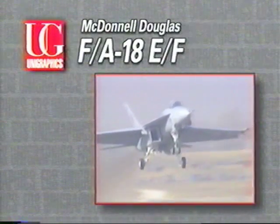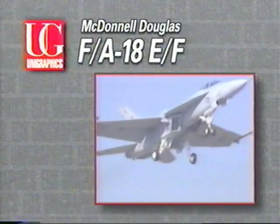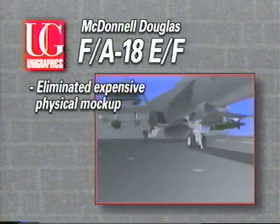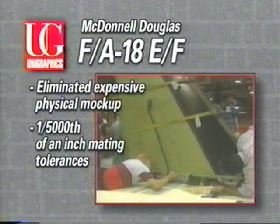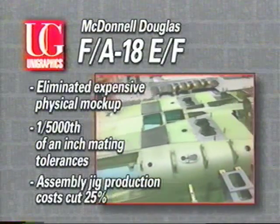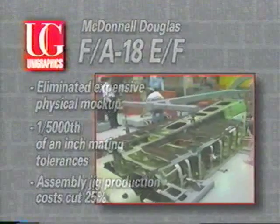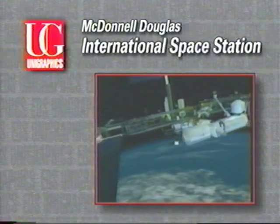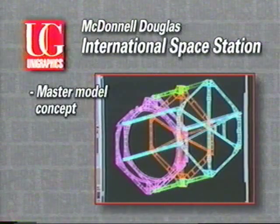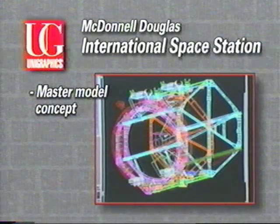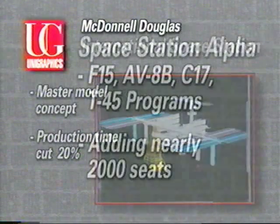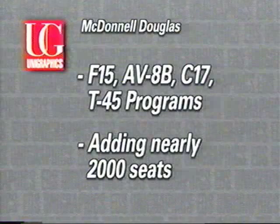McDonnell Douglas uses Unigraphics on the F/A-18 E/F program, where the company and its suppliers standardized on UG. As a result, McDonnell Douglas eliminated a costly physical mock-up, achieved mating tolerances of one five-thousandth of an inch, and cut the cost to produce assembly jigs by 25%. On the International Space Station project, McDonnell Douglas uses Unigraphics and the master model concept to design critical parts of the space station. Using UG, production time has been easily cut by 20%. McDonnell Douglas also uses Unigraphics for four other programs, and recently committed to a new long-term contract for nearly 2,000 seats.